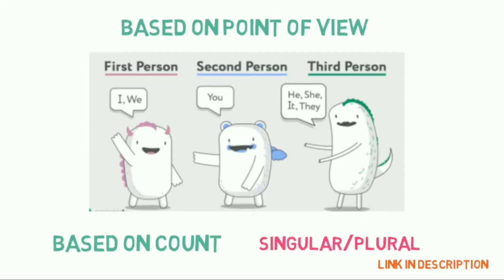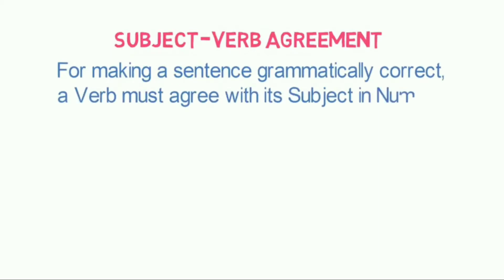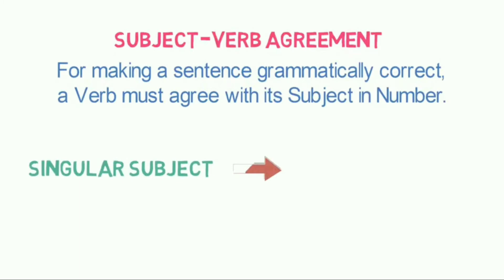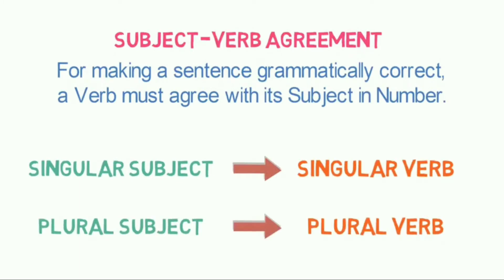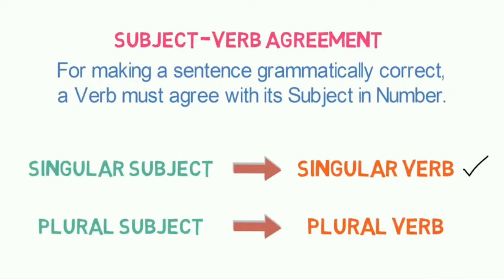Now, let's understand the main topic of today: what is subject-verb agreement? For making a sentence grammatically correct, a verb must agree with its subject in number. That is to say, in any sentence, a singular subject must have a singular verb, and a plural subject must have a plural verb. This is the most general rule. Please note this statement holds true only when the subject is in third person.